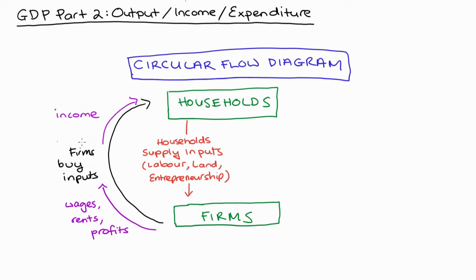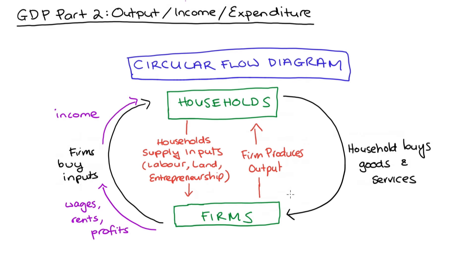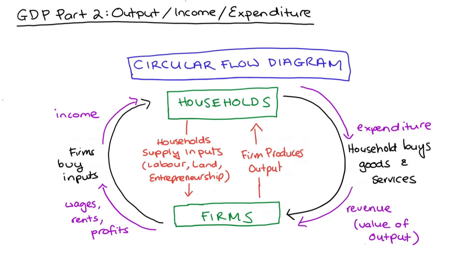That is, the household sees this as income. The firm uses the inputs supplied by the households in order to produce goods and services that the households will buy from the firms. So there is a flow of resources — goods and services — going back to the households from the firms, and there will be a corresponding flow of expenditure, of monies, to the firms from the households in exchange for those goods and services. From the perspective of the households, this money flow is expenditure, but we can also see that it's revenue for the firm. It represents the value of the goods and services that are being produced by the firm.